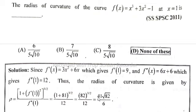curvature is given by the formula: ρ is equal to [1 plus (f'(1))²]^(3/2) divided by f''(1). This is equal to [1 plus (f'(1))²]^(3/2)